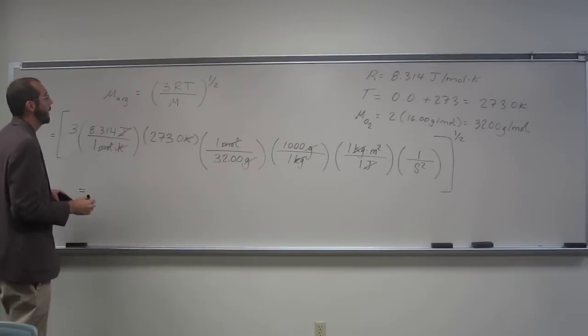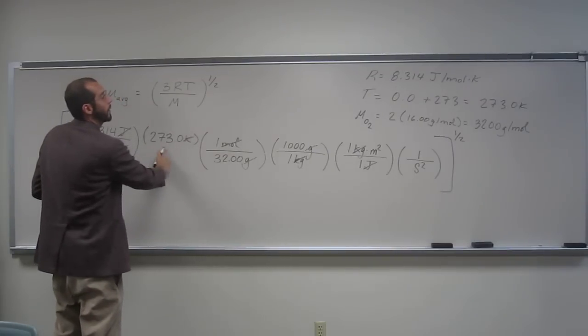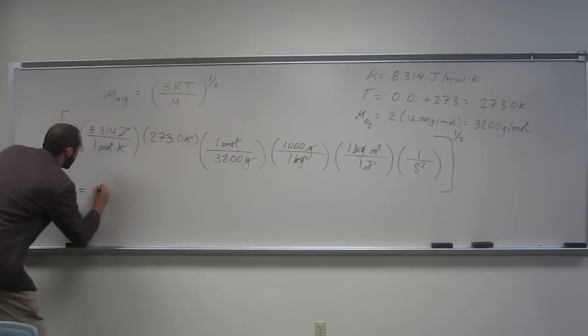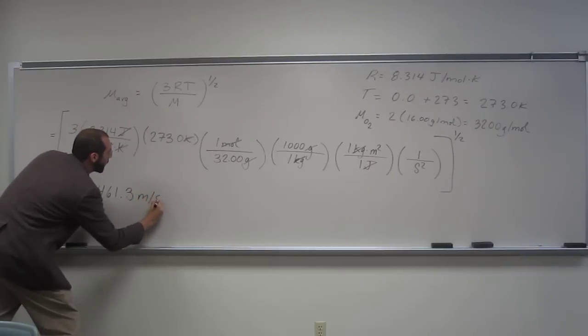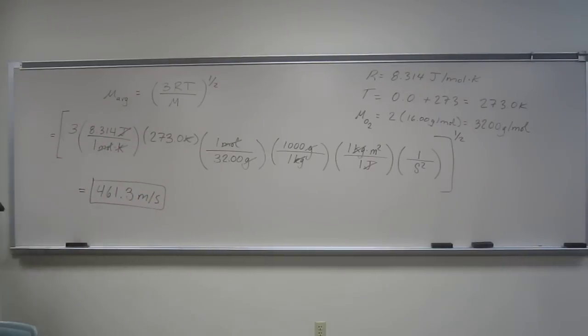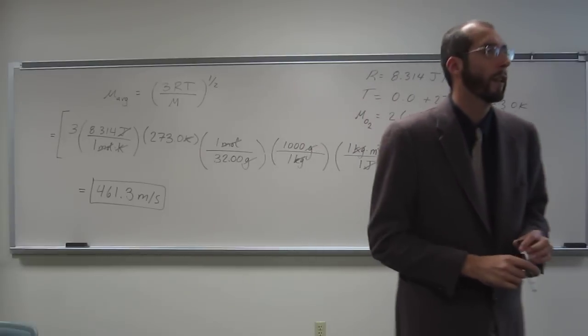And I get, so this one is to, I guess this is the only units that we've used. So 4 sig figs. So 461.3 meters per second. So that's how fast the average oxygen molecule is going at zero degrees Celsius. Is everybody okay with that kind of a calculation?